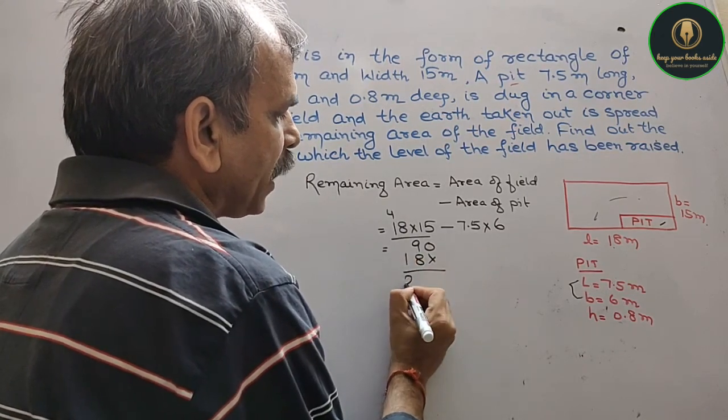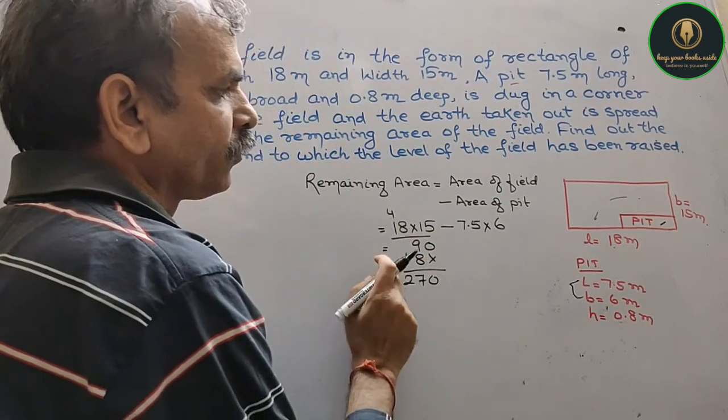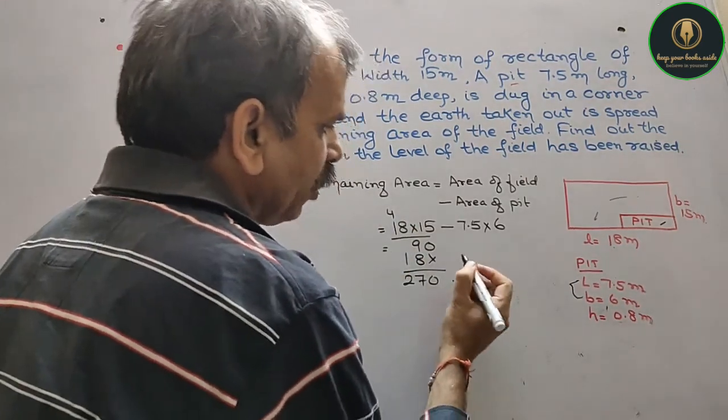So 18×15 gives 270, minus 45 from 7.5×6.